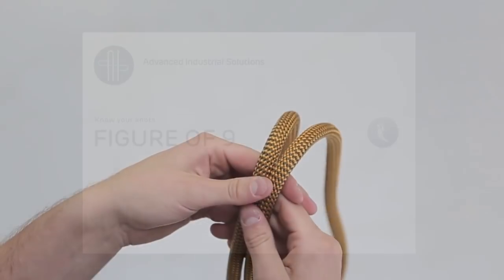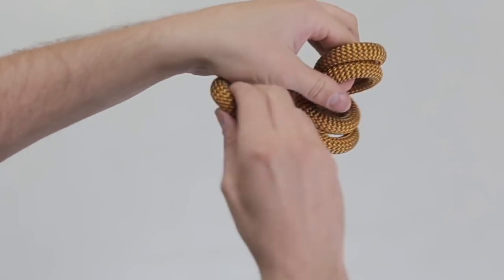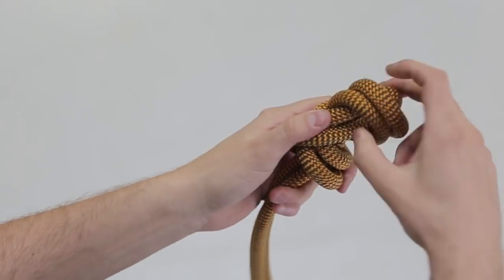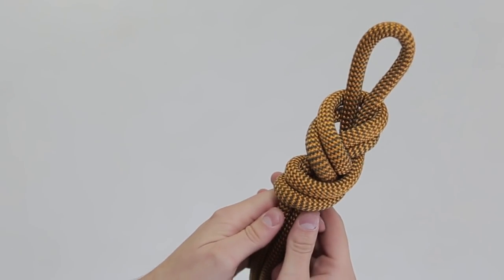Form a bite. Wrap the bite around both ends to form a loop. Instead of coming around through the back of the loop to make a figure eight, pass the bite around a half turn again and then down through the loop to make the figure nine.